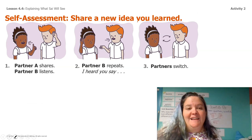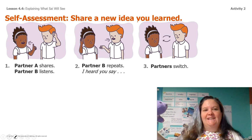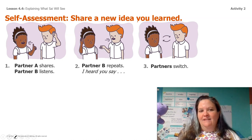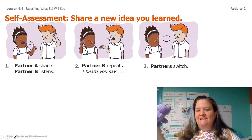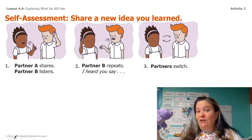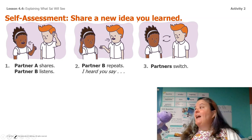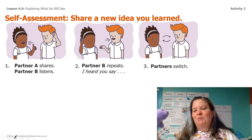I'd like you to grab your partner again and tell them at least one idea that you've learned. So I would tell Lavender one idea I learned, and then Lavender would tell me what she heard. Then Lavender would tell me one idea that she learned and I would tell her what I heard. Go ahead, talk to your partner about one thing you've learned so far from this unit.